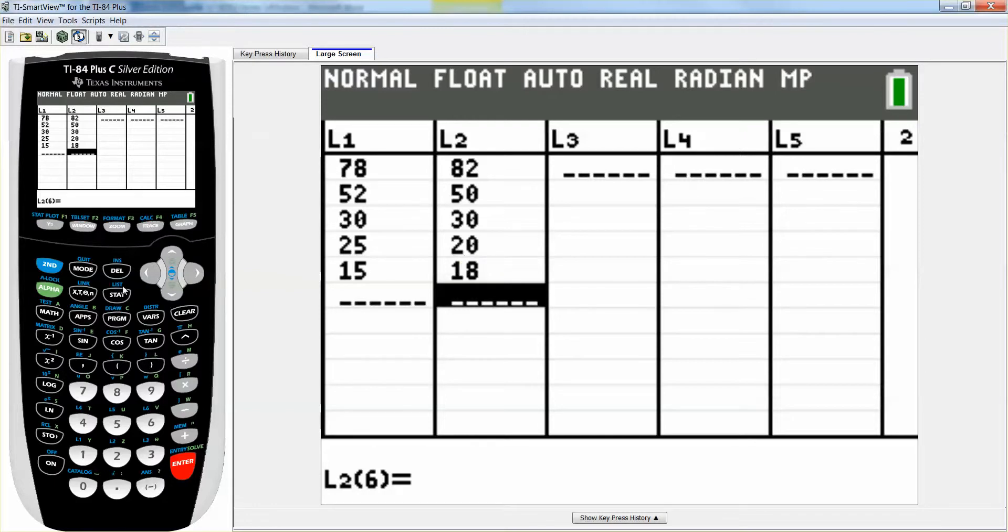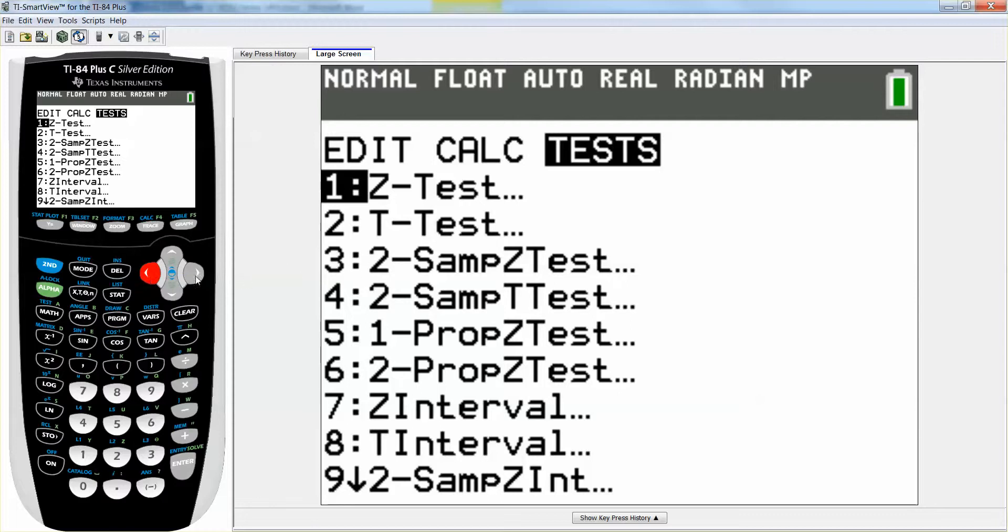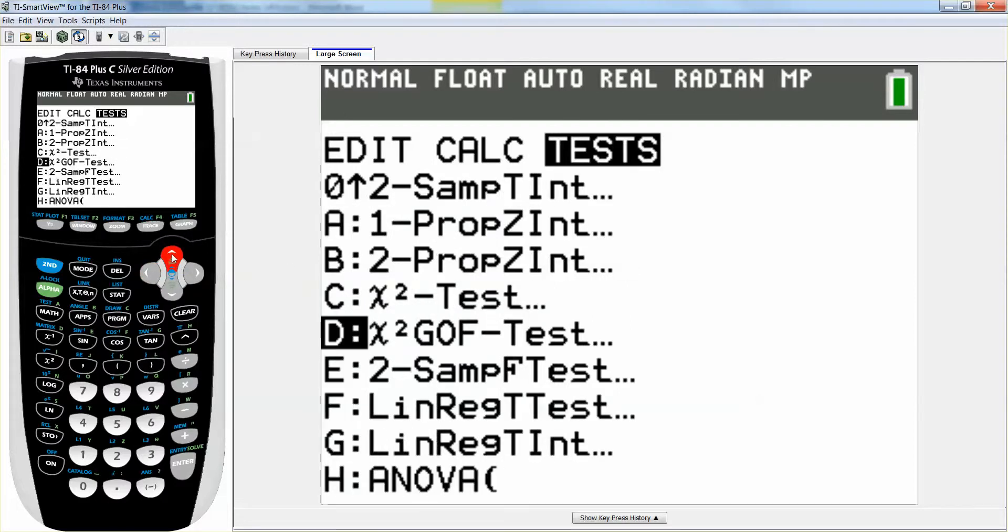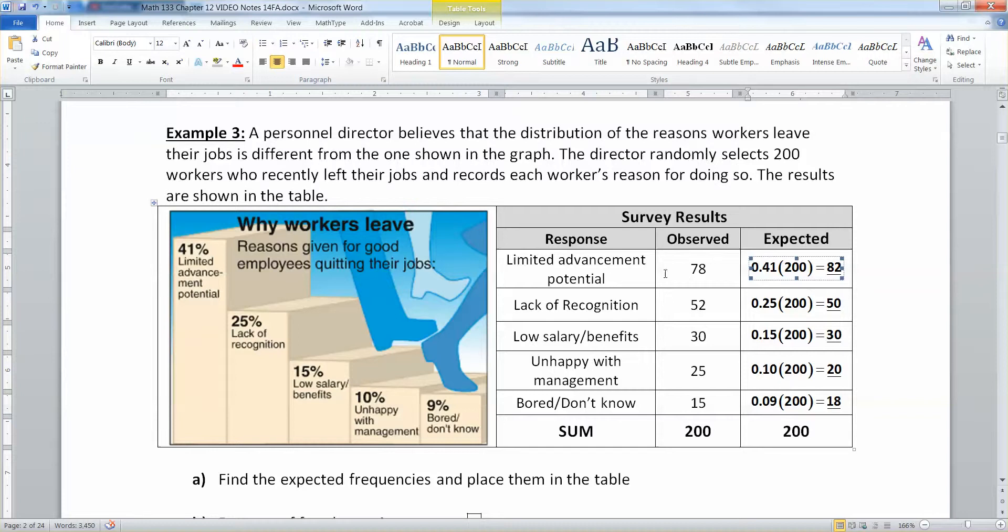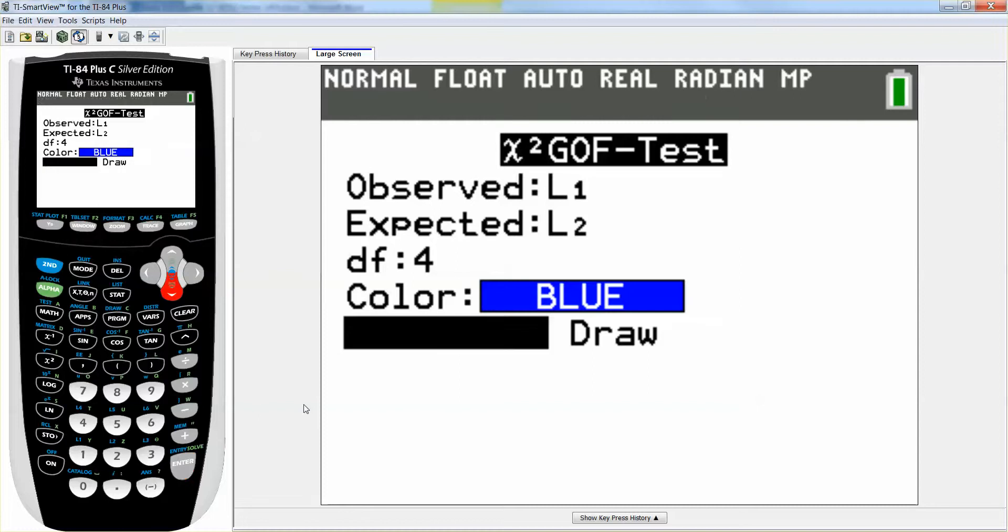Then you want to go to stat, go to tests, and you might as well go up because it's close to the bottom. There it is—the chi-square goodness of fit GOF test. That's the one you're looking for. If you have an 84 with the newest operating system, that test is there. If you have a TI-83, you do not have this test. You'll have to use something else called StatCrunch. If you have an 84, use letter D right here. It's going to say where are your observed values—for me those are in L1, expected values are in L2. Degrees of freedom is the number of categories minus one. There are five categories here, so my degrees of freedom is four. Then I'm gonna go down to calculate and press enter.